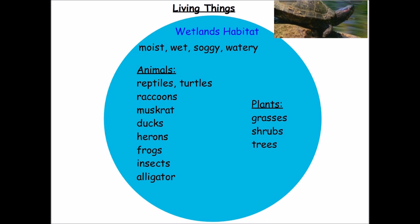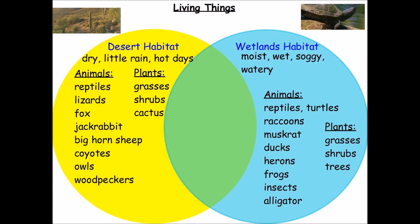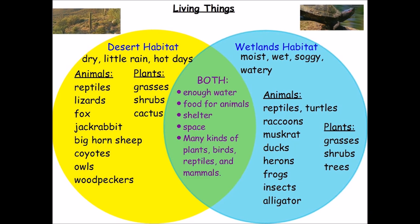The wetlands habitat was wet and soggy. Did the wetland have all four essential parts? Yes! What do desert and wetland habitats have in common? Both habitats had enough water and food for the animals that made it their home. There were many kinds of plants, birds, reptiles, and mammals.